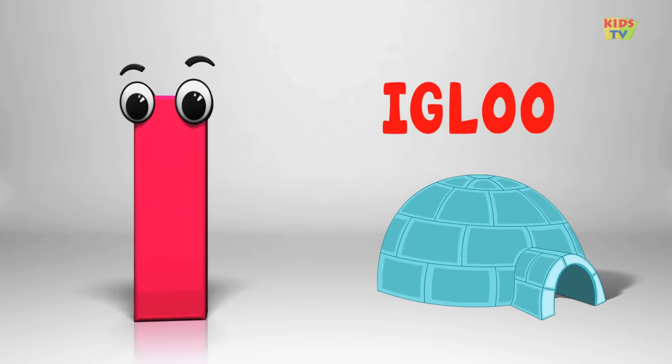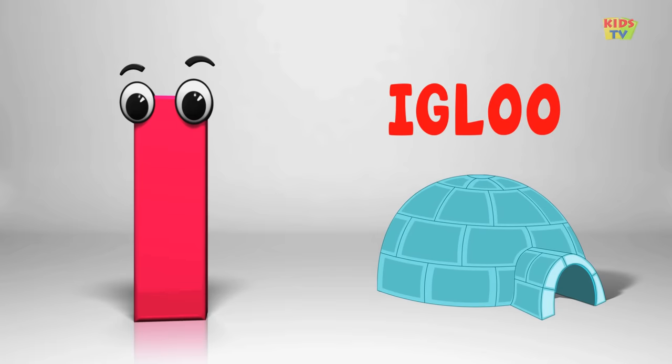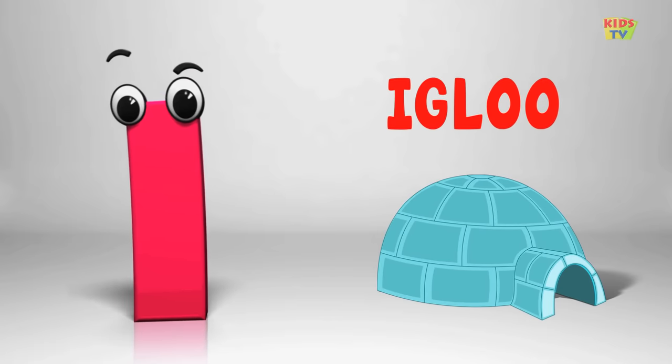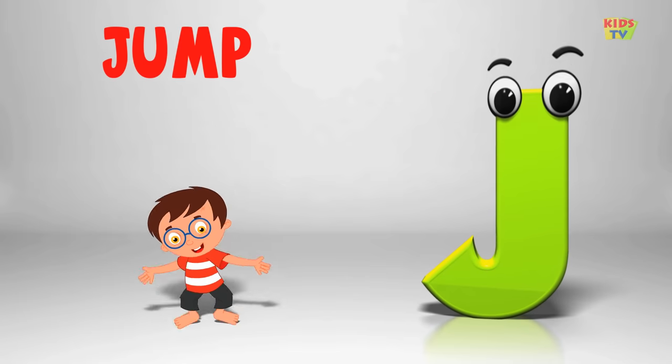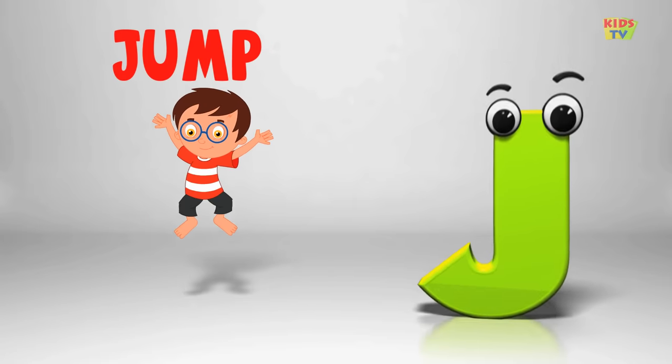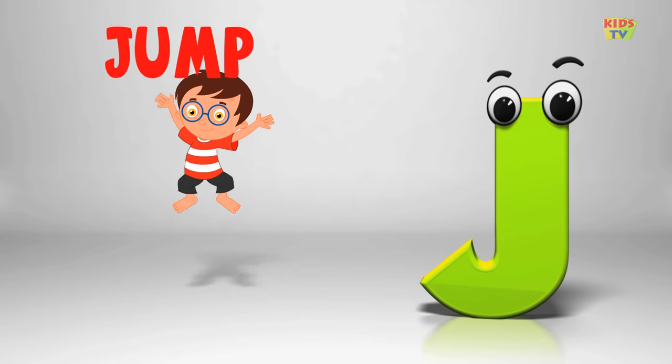I is for igloo, i-i-igloo. J is for jump, j-j-jump.